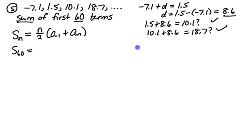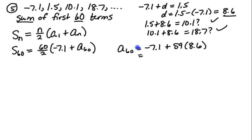So S sub 60 is 60 divided by 2. A sub 1 is negative 7.1, and then this is A sub 60. Obviously I don't know the 60th term yet, but I remember from previous work that to get to the 60th term, I just have to add d 59 times to the first term. So A sub 60 is the first term plus 59 times 8.6, which turns out to be 500.3.